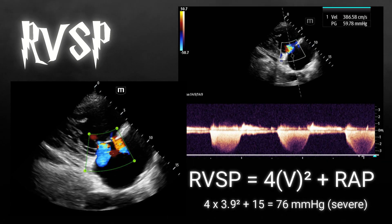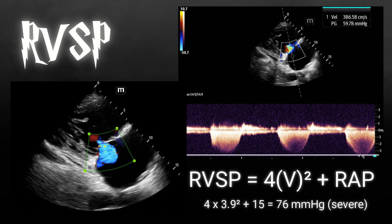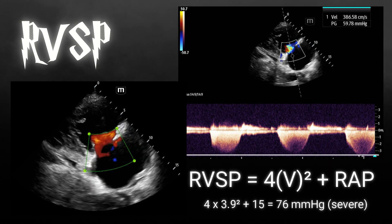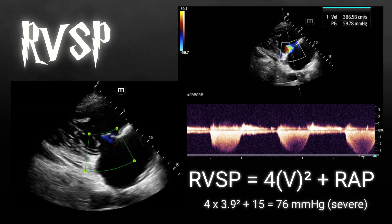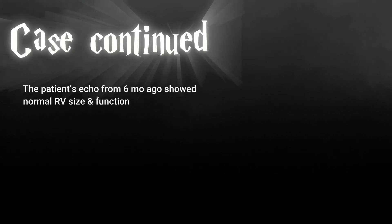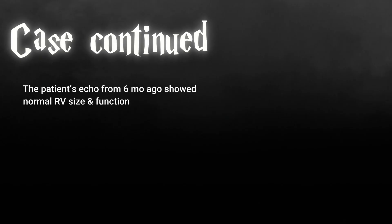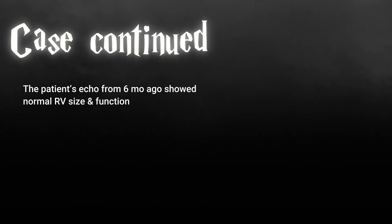A quick look back at the patient's chart shows that an echo six months ago had normal RV size and function. How did these point-of-care ultrasound findings affect patient care?